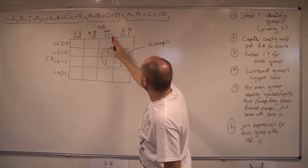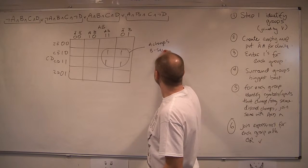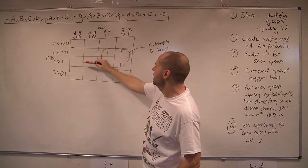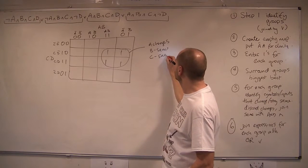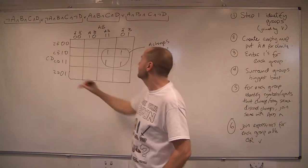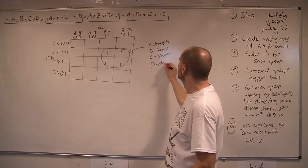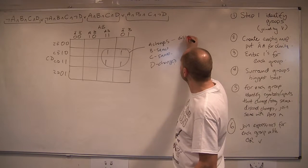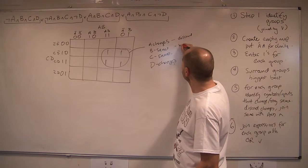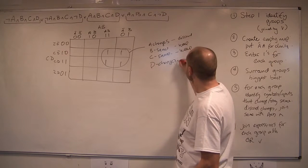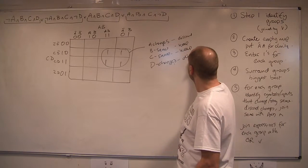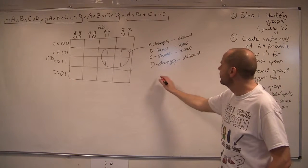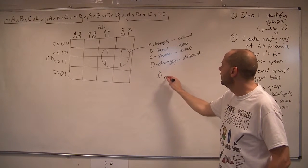We've got B — B stays the same. Right, let's go vertically. We've got C — C stays the same. That looks good. And D goes from not D to D, so D changes. Okay, so we're going to discard the changes — remember, keep the ones that stay the same and discard the changes. So the expression that we keep from that is B and C.